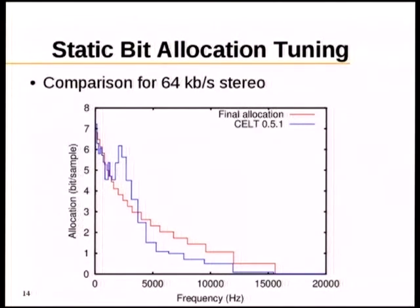A lot of tuning was done on the static bit allocation. In CELT, one way to reduce side information is that the bit allocation is frozen in the bitstream. The main change was stopping the starvation of high frequencies, which required extensive listening tests. In the bit allocation graph, the red line is the current final allocation and blue is the 2009 allocation. The key difference is that the mid-to-high frequency region now has significantly more bits, improving sound quality, while the previously over-allocated region had bits moved away.